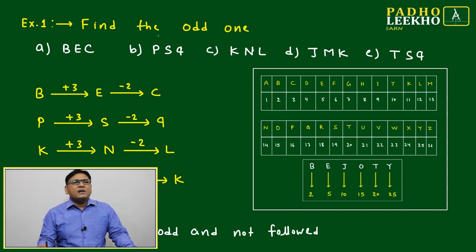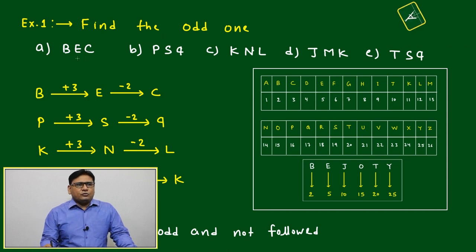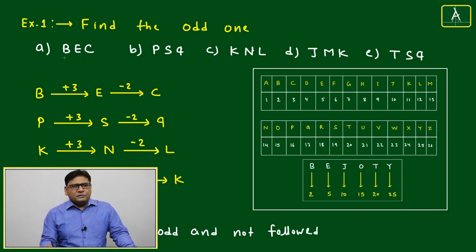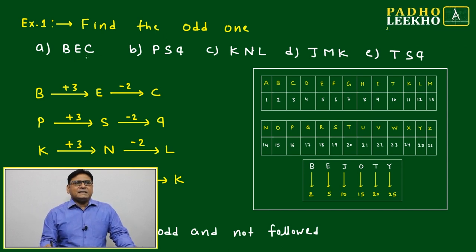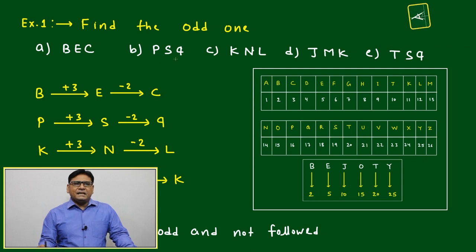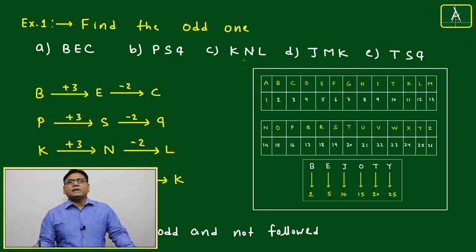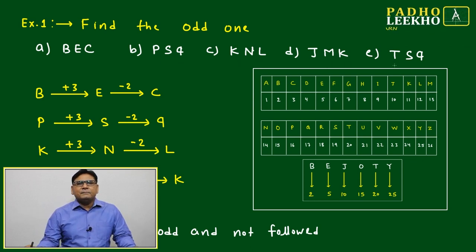In this topic, find the odd one out. The options given are: BEC, PSQ, KNL, JMK, and TSQ.